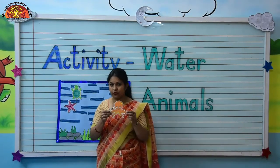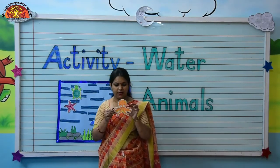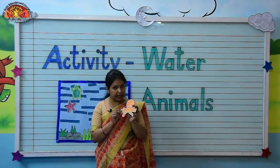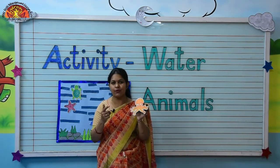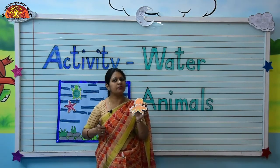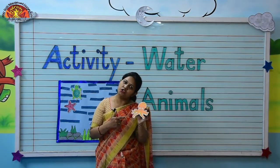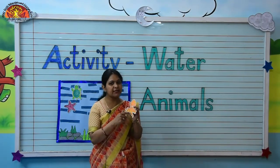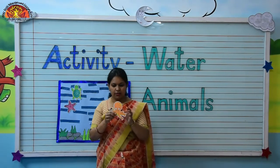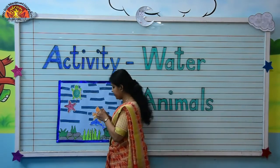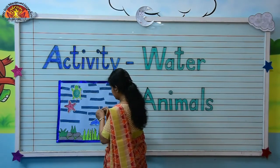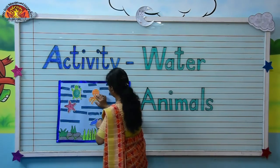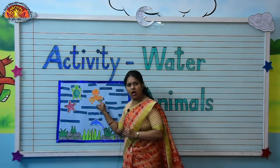Now, which water animal is this, kids? Is it a fish? No. Is it a crab? No. It is an octopus. Octopus has eight legs. We will paste it here. Very good, kids!